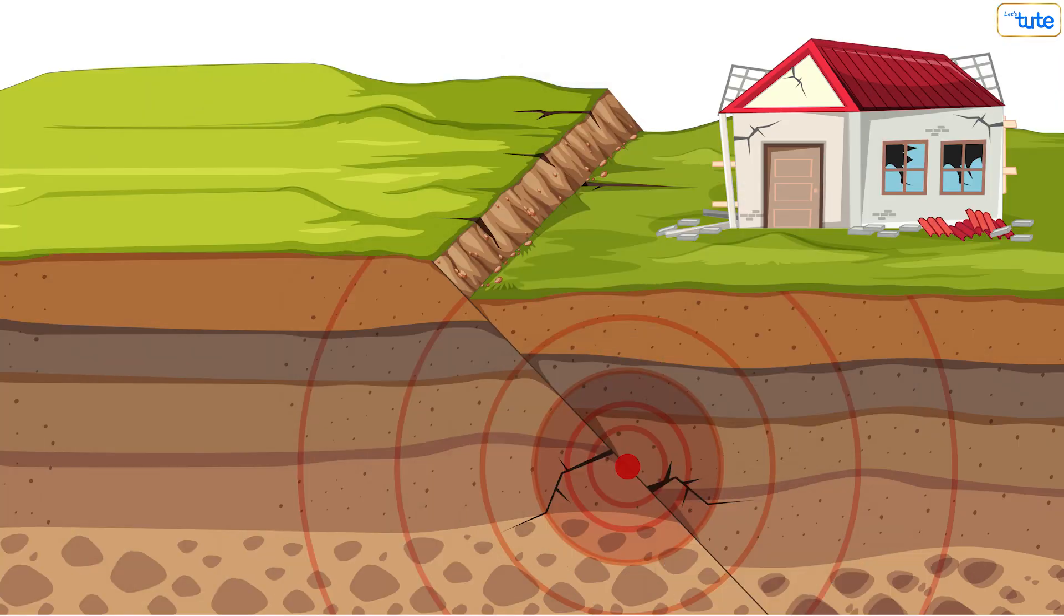The point where the earthquake starts underground is called the focus or hypocenter, while the point directly above it on the surface is known as the epicenter.